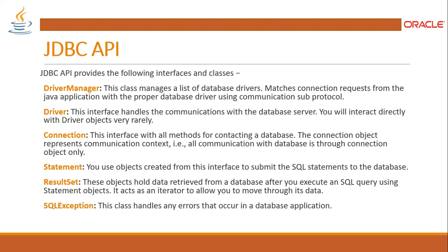We have ResultSet — this object holds the data retrieved from the database after you execute a SQL query using a Statement object. It acts as an iterator to allow you to move through its data. Finally, we have SQLException, which handles any kind of exceptions or errors that occur during the implementation and execution of the database application.